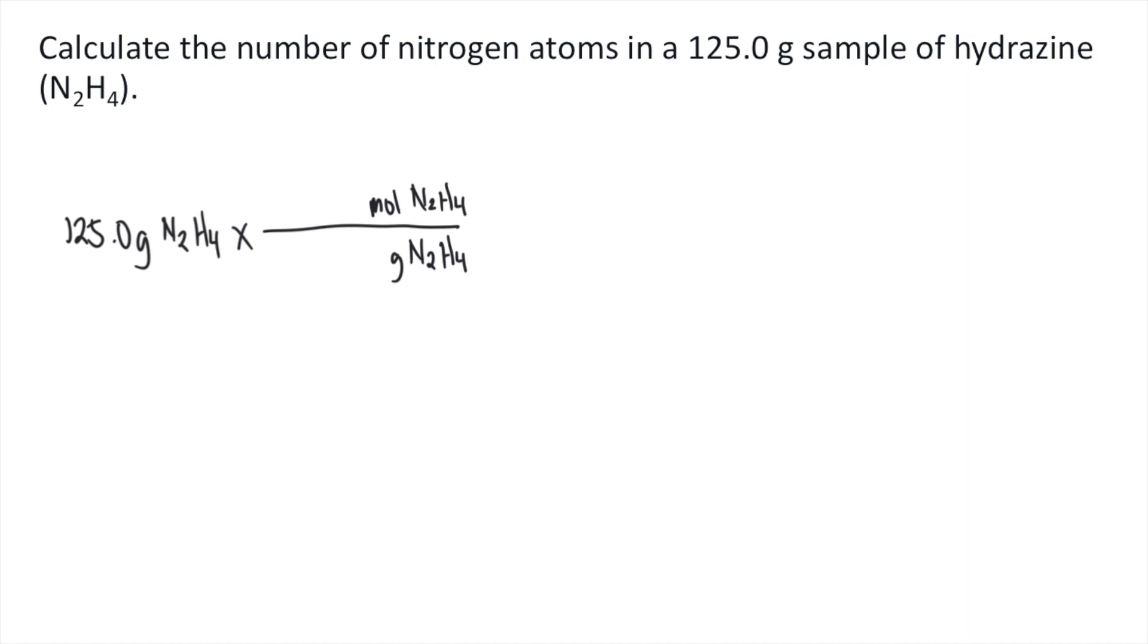We need the molar mass of N2H4. So one mole of N2H4, if you look at your periodic table and solve for the molar mass of hydrazine, that's 32.052, around this number, grams of N2H4.